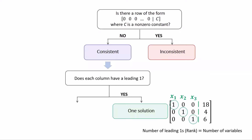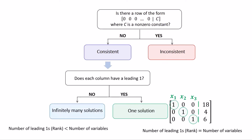On the other hand, if not all columns have a leading one — meaning the number of leading ones is less than the number of variables — there will be parameters in the solution, and thus the system will have infinitely many solutions. The number of parameters in the solution is the difference between the number of variables and the number of leading ones, or the rank of the augmented matrix.